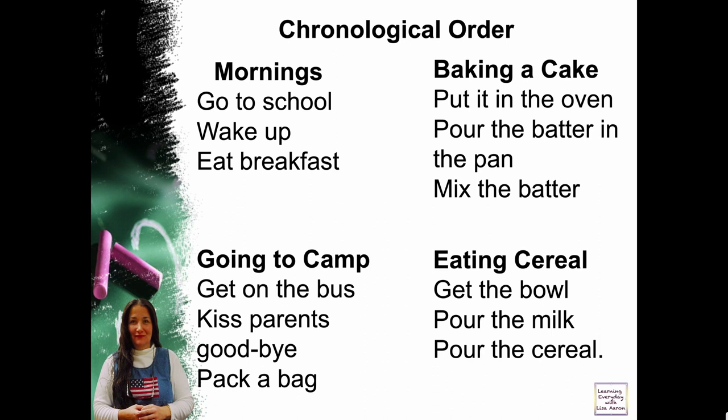Going to camp: get on the bus, kiss parents goodbye, pack a bag. You should pack your bag, kiss your parents goodbye, and then get on the bus — that would be the right order for going to camp. How about eating cereal? Get the bowl, pour the milk, pour the cereal — no, the milk doesn't go before the cereal. You get the bowl, then you pour the cereal, and then you pour the milk. Chronological order is very important to follow so your reader can follow along and it makes sense.